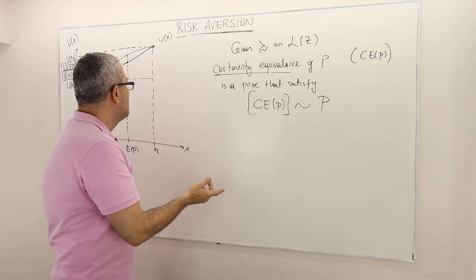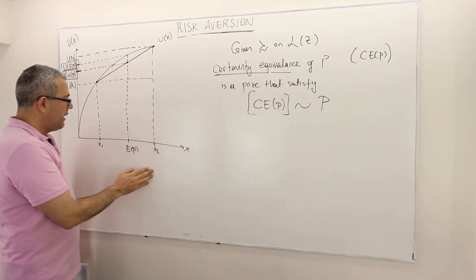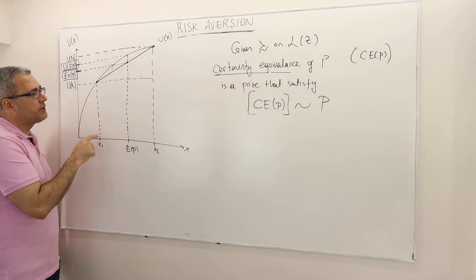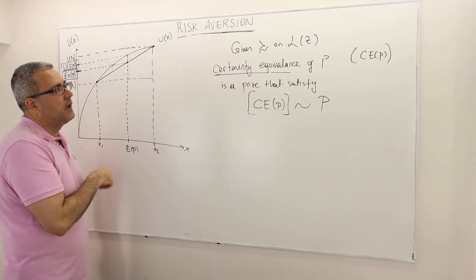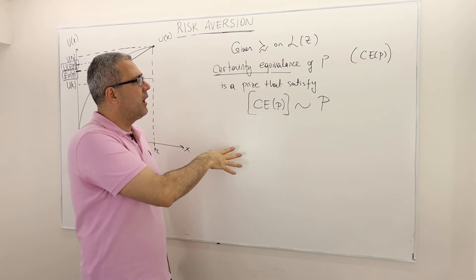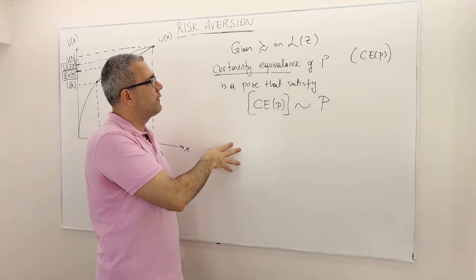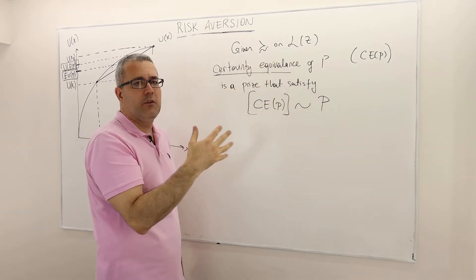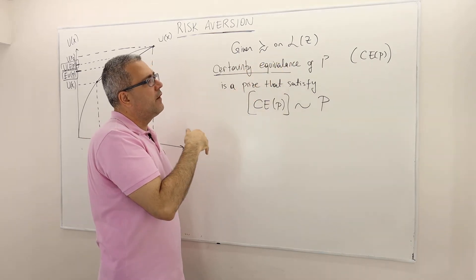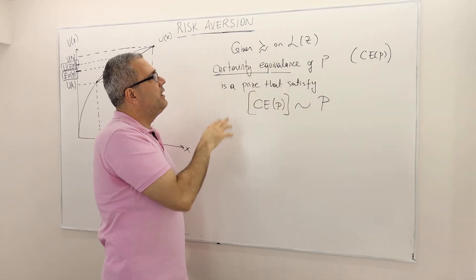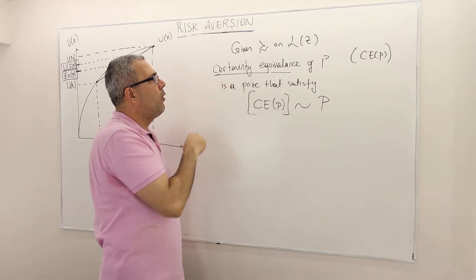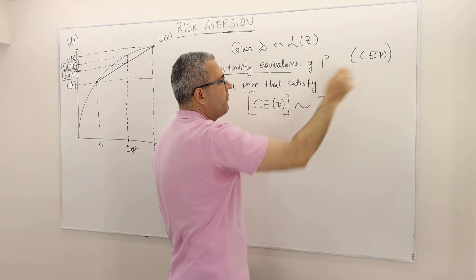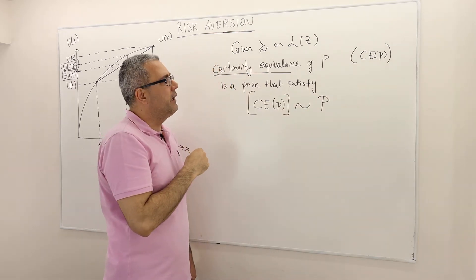Welcome back. So we are again on the same page where we are talking about risk-averse preferences. We're going to define a new concept which is also very important. Given that we have a preference relation on the set of lotteries, for any lottery P, we define a concept called certainty equivalence, denoted by CE of P.